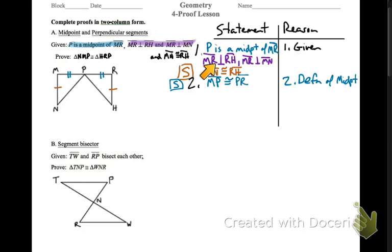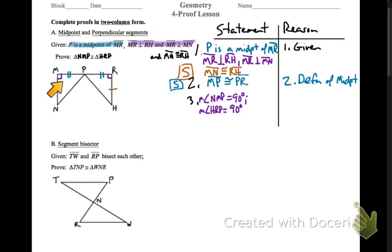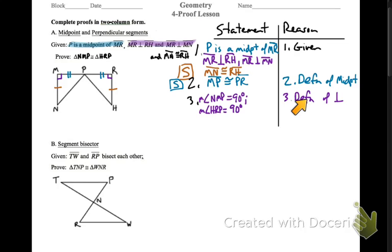And what does this stuff up here in the purple mean? Perpendicular lines mean that we have 90-degree angles. Now, when we have right triangles, which is what we have here, we can use HL. But this is the hypotenuse — neither of these sides are — so we can't use HL. We're going to have to prove this another way, so I need to show that these angles are congruent. The reason for number three is the definition of perpendicular.